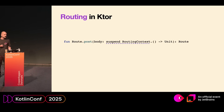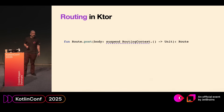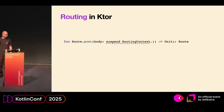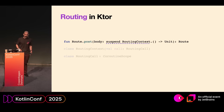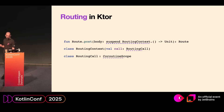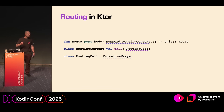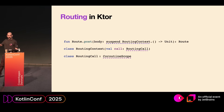But where is a coroutine scope coming from? In our post handler lambda, we have a suspend function since we are running in a coroutine. And we have a routing context extension receiver. This routing context is a simple class with a single property, the routing call. And this routing call is a coroutine scope, so we can use it to create new async coroutines.